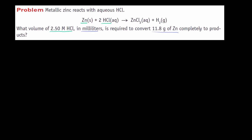Let's verify that this is really a balanced equation. You have one zinc on the left-hand side, one zinc on the right-hand side, two hydrogens on the left, two hydrogens on the right, two chlorines on the left, two chlorines on the right. So it looks balanced.